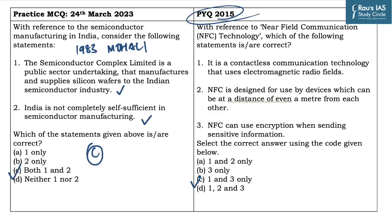The answer to the previous year NFC question is C, which is 1 and 3 only. The second statement says NFC is designed for use by devices which can be at a distance of even a meter from each other — as the name suggests 'near field communication,' you should get an idea that it works for a shorter distance. A meter is a very long distance and this technology fails to work at such a distance. Hence statement 2 is incorrect. Statements 1 and 3 are correct as NFC uses electromagnetic radio fields for contactless services. Hence the correct answer is 1 and 3 only.